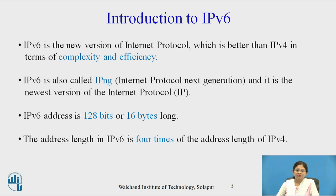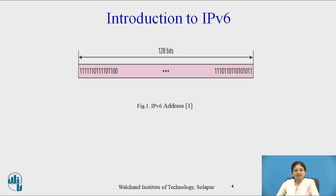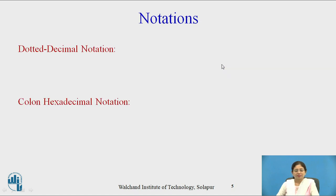We can imagine IPv6 allots 2 raised to power 128 addresses. This shows the IPv6 address space — total 128 bits are reserved for the addresses. IPv6 has two notations: dotted decimal notation and colon hexadecimal notation.